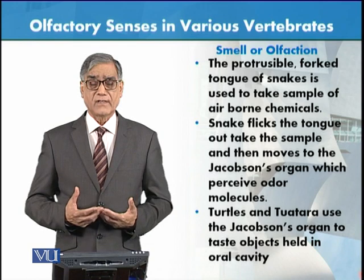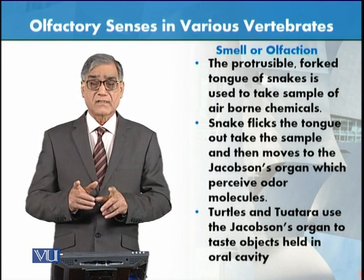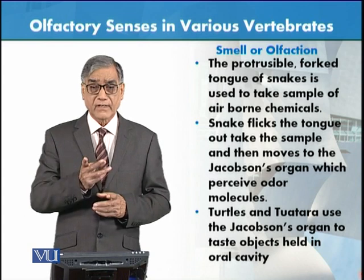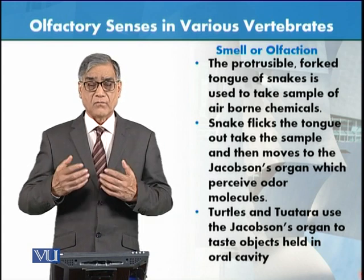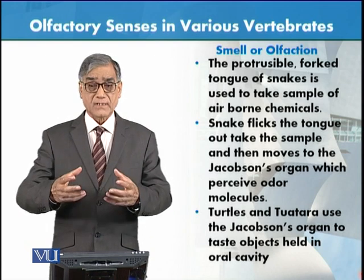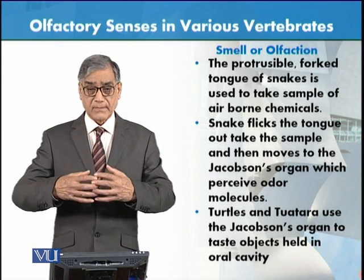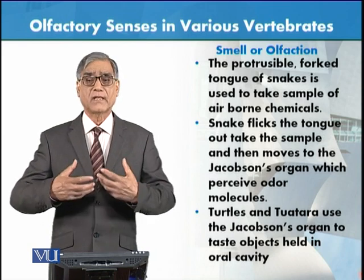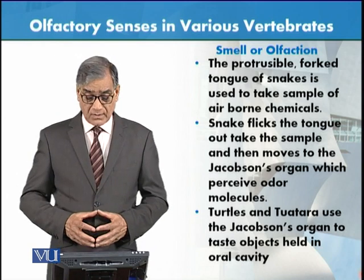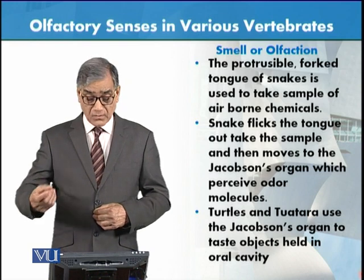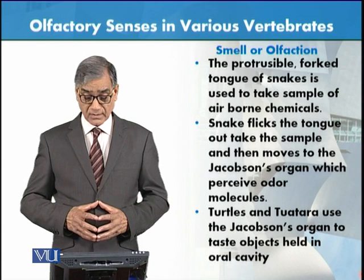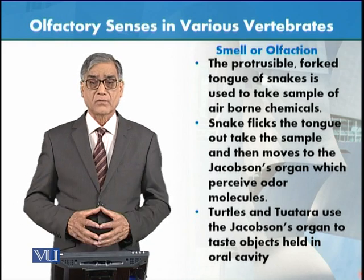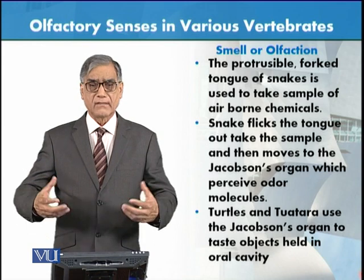Snakes have a very protrusible, bifurcated tongue that is highly sensitive to smell. A snake flicks its tongue out to take a sample from the outside environment, then moves it to Jacobson's organ, which perceives the odor. This allows the snake to detect and locate food.